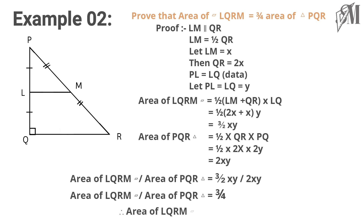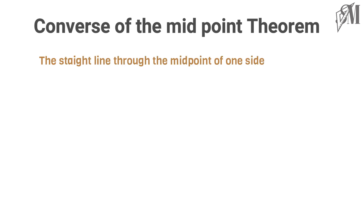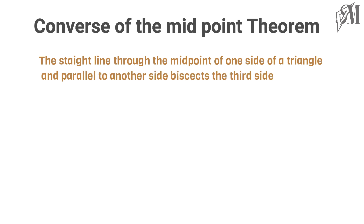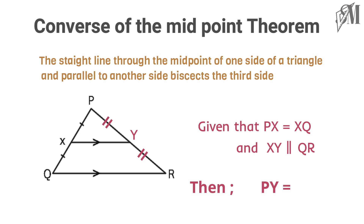Now I cross multiply to get: area of LQRM equals three-fourths the area of triangle PQR. The midpoint theorem also has a converse. The straight line through the midpoint of one side of a triangle and parallel to another side bisects the third side. That is, if X is the midpoint of PQ and XY is parallel to QR, then Y becomes the midpoint of PR, giving PY equal to YR.